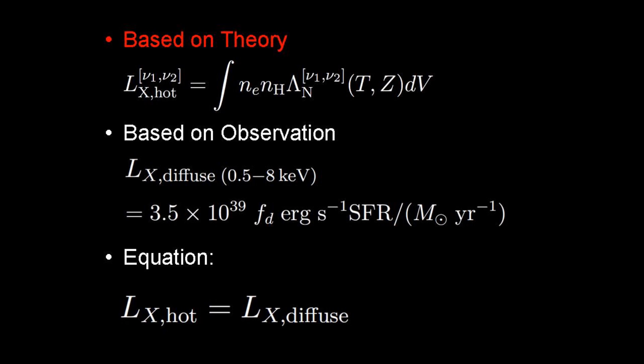In theory, we can calculate x-ray emission between two frequencies from the hot wind fluid. On the other hand, based on observation, we adopted another equation to estimate the diffuse x-ray emission. Here, fd is a fraction of the diffuse x-ray emission due to the hot wind fluid. In the paper, we discussed the range of fd and showed that changing the value of fd does not change our basic results.